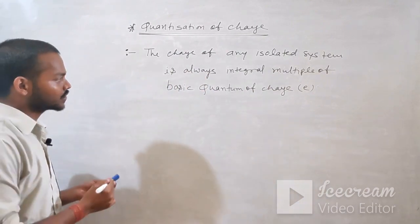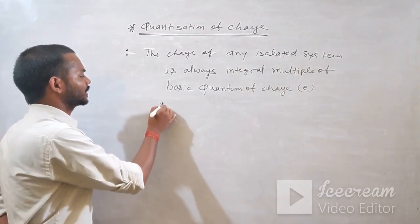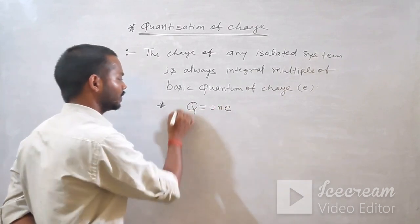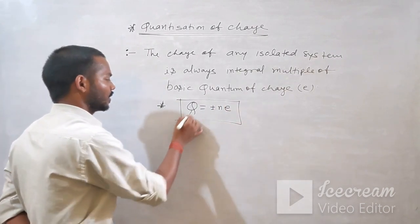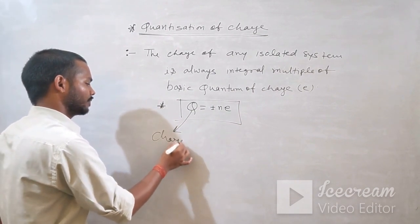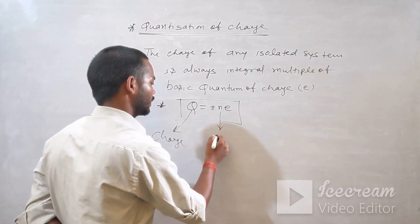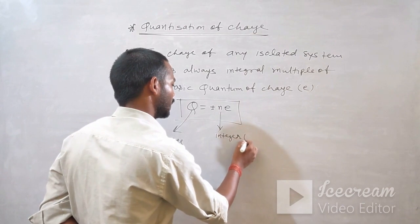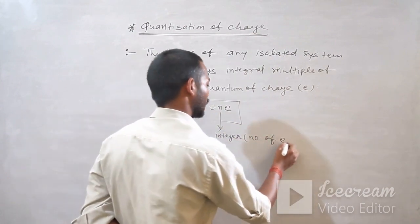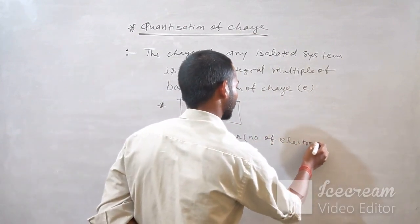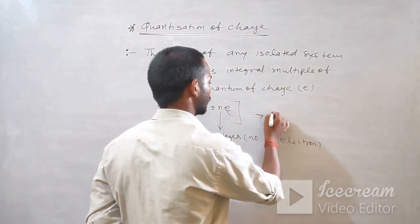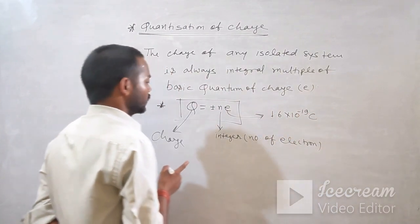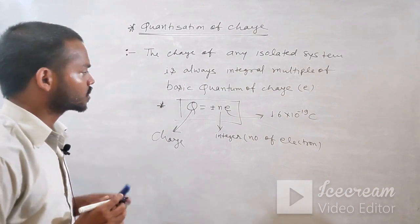Charge is denoted by Q. So Q = ±NE, where N is an integer (number of electrons) and E is 1.6 × 10⁻¹⁹ Coulombs — the basic quantum of charge.